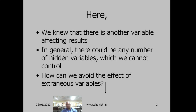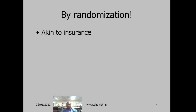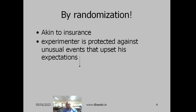Still there will always be some variation in extraneous variables. For that, we can use the technique of randomization. This was first identified by Fisher — how we could eliminate the bias due to such variables. The experiment is thereby protected against any unusual event that has not been planned for.